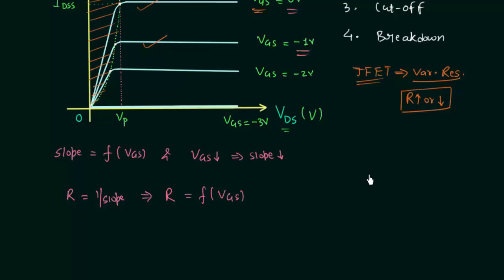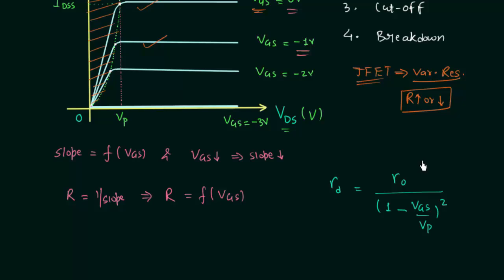Now we will calculate the resistance at a particular level of VGS. The formula we use is: RD equals RO divided by the quantity 1 minus VGS divided by VP, whole squared. Here, RO is the resistance at VGS equal to 0V, RD is the resistance at a particular VGS, and VP is the pinch-off voltage.